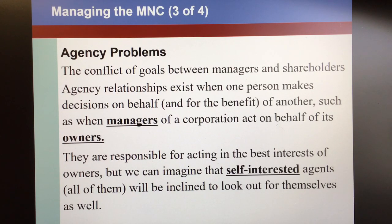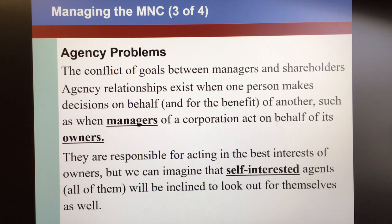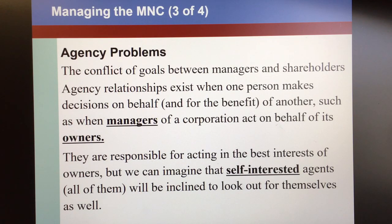In the modern corporation, in a business of any size, there is a separation between ownership and control. If you own shares in Google, for instance, you as an owner have really nothing to say about what's going on inside the business day-to-day. Especially in large corporations, there can be a tremendous gap between the managers making investing, financing, and dividend decisions and the shareholders for whom they are supposed to be working. The conflict of goals between managers and shareholders is called the agency problem, arising from that separation of ownership and control.